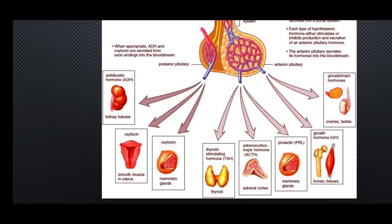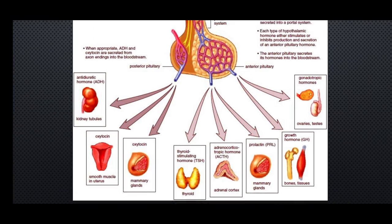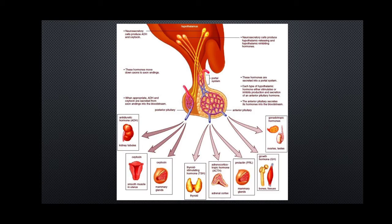Sometimes people think ADH comes from the pituitary — it is true it is released from the pituitary to the kidney. However, it is actually produced by the hypothalamus, goes to the pituitary, stays there, modifies slightly, becomes active, and is then released when needed. It then regulates the glomerular filtration rate and overall functioning of the kidney.